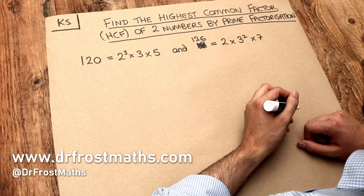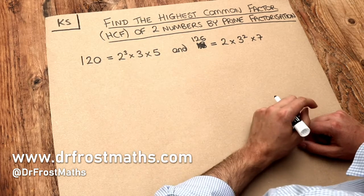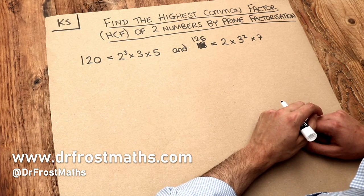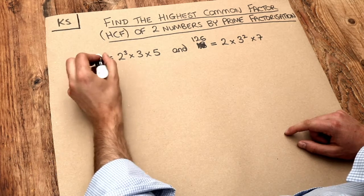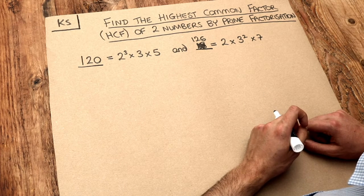Hello and welcome to this Dr Ross Math's key skill video on finding the highest common factor or HCF of two numbers by using prime factorization. We've got these two numbers here, 120 and 126, and we want to find the highest common factor.